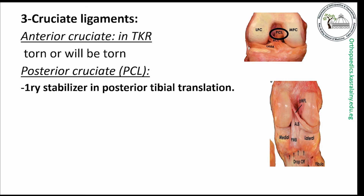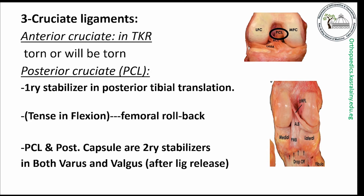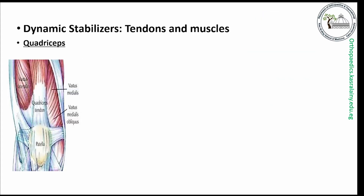The PCL is a primary stabilizer in posterior tibial translation. During flexion of the knee, it becomes tense to a degree that prevents initial rolling of the femoral condyle, changing it to a sliding motion — known as rollback of the femoral condyle. It is also a secondary stabilizer together with the posterior capsule against varus and valgus stresses after ligament release.